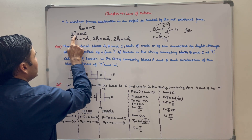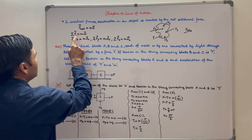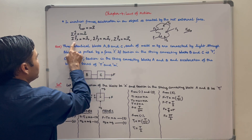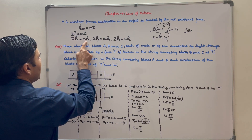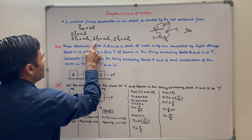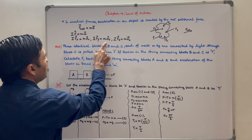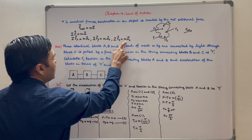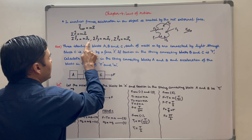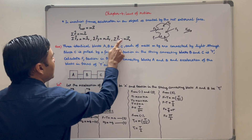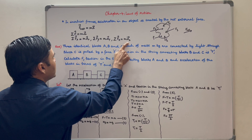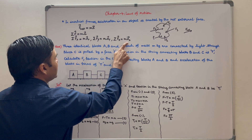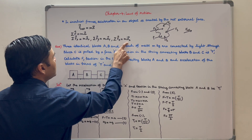If this force is resolved along three axes X, Y, and Z, then summation Fx is equal to MAx, summation Fy is equal to MAy, and summation Fz is equal to MAz, where Ax, Ay, and Az are components of acceleration along X, Y, and Z axes respectively.